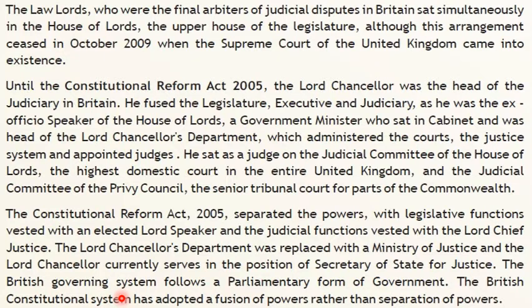The Lord Chancellor currently serves in the position of Secretary of State for Justice. The British governing system follows a parliamentary form of government. The British constitutional system has adopted a fusion of powers rather than separation of powers among the different organs of government — the legislature and executive are interdependent on each other. This is about constitutional monarchy in Britain.